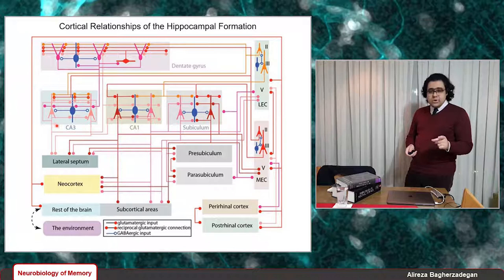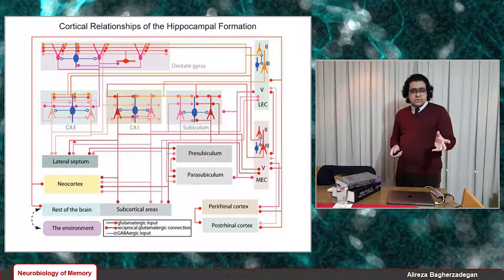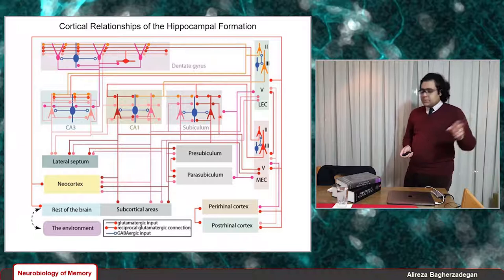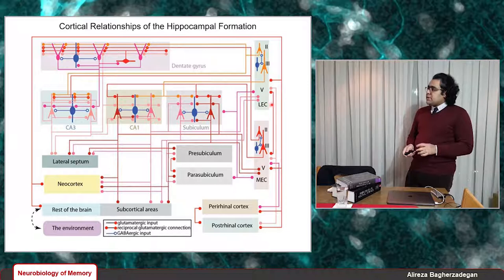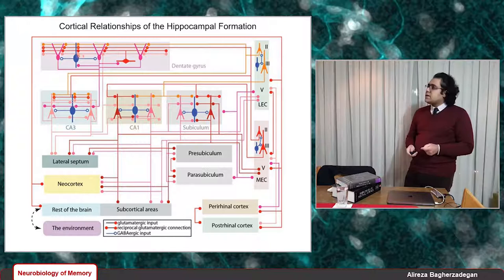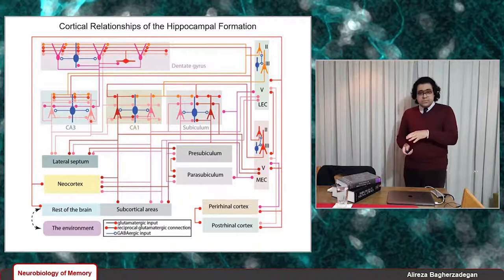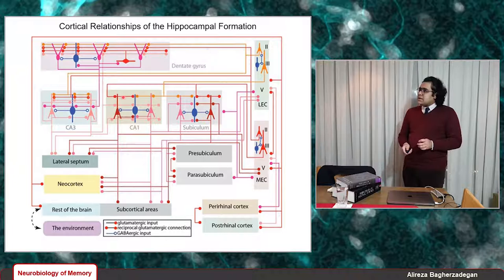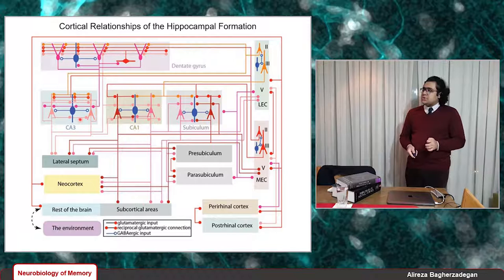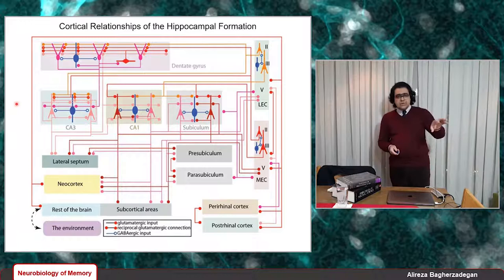One important note is that CA3 pyramidal cells are at the heart of the hippocampal formation because of their extensive axonal collateral system. The stellate cells or excitatory cells at layer 2 of the entorhinal cortex contact the granule cells in the dentate gyrus. Those granule cells contact the pyramidal cells in CA3 via the mossy fiber pathway. Then the Schaffer collateral pathway carries signals from CA3 pyramidal cells to CA1 pyramidal cells. This indirect route is called the trisynaptic pathway.